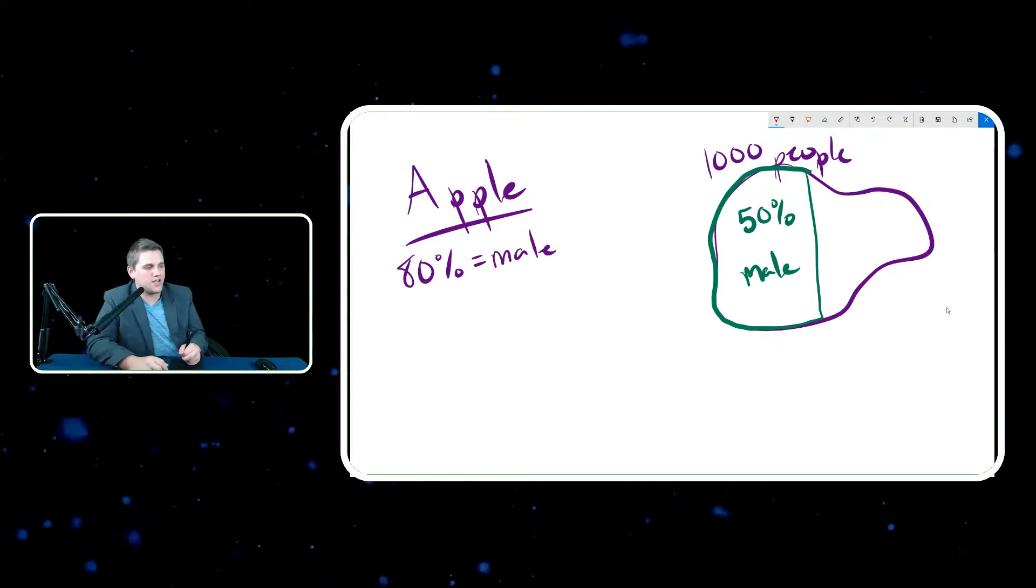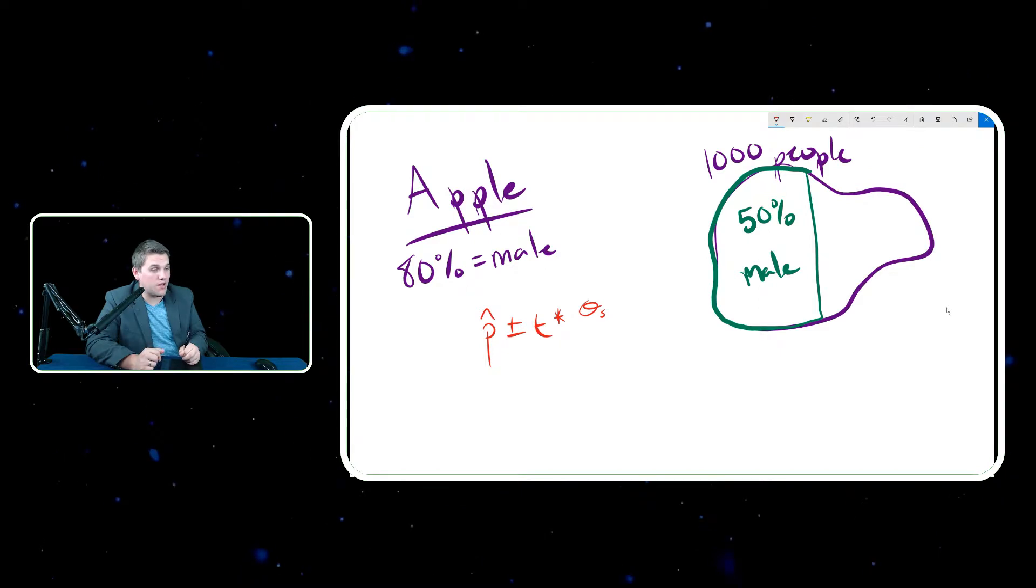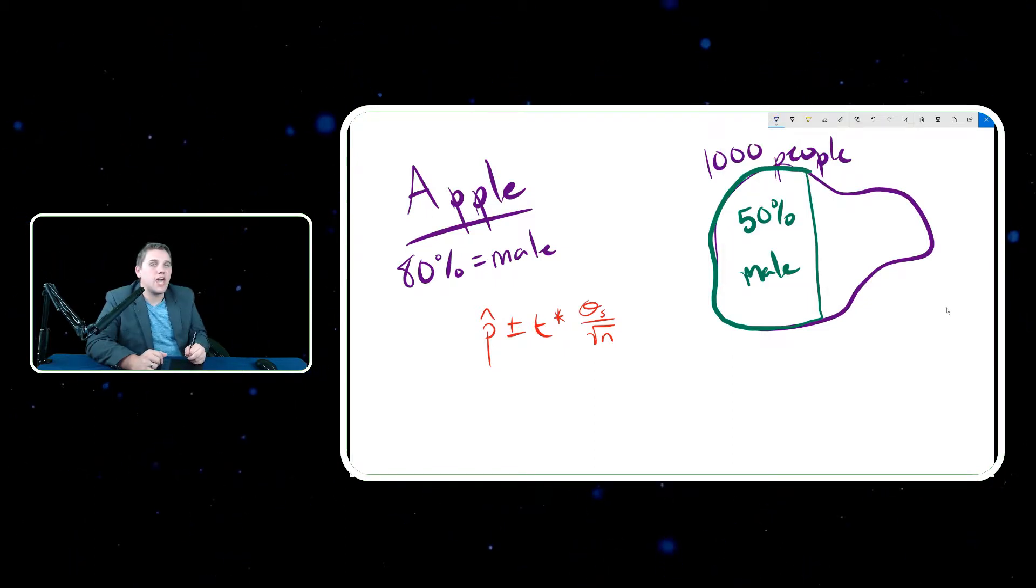If you want to understand the math of developing that, take a look at that last lecture. We talked about how the formula was p hat plus or minus t star times the standard deviation, which had a different formula, divided by the square root n. And let's say we do that and we get a confidence interval of, let's say, let's do 0.3 and 0.7.